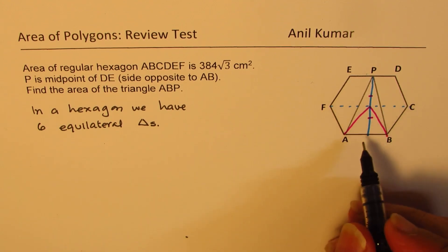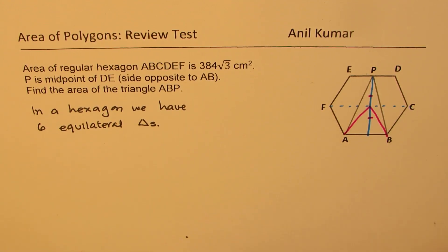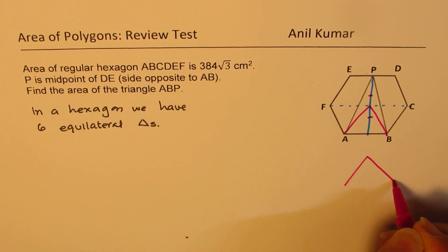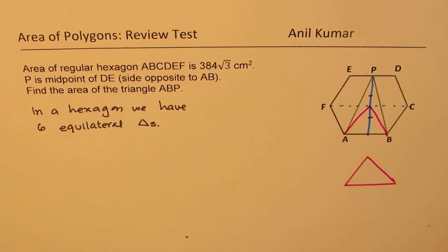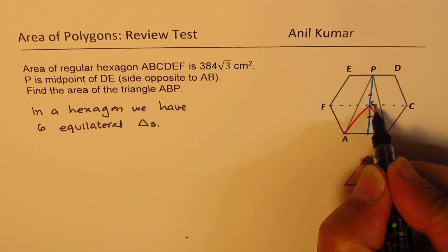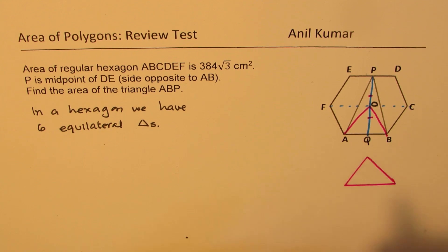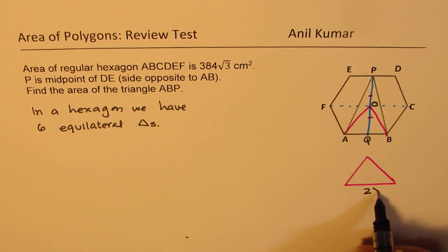Let us assume that this triangle which we have drawn, let me redraw here. Let's call this point as O. Let's call this as Q. In this particular triangle, let's assume that each side is 2x.